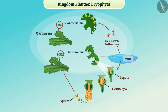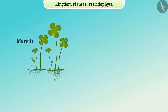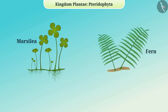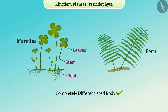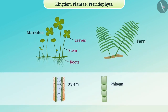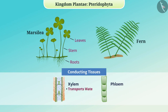Now let's understand pteridophyta. Plants of the type Marsilea, fern, etc. are included in pteridophyta. This class of the plant kingdom consists of all those plants whose body develops completely into roots, stems and leaves — that means their body is completely differentiated. They have specific tissues for the transport of water and other necessary substances from one part of the body to another. We call such tissues conducting tissues. Xylem tissue transports water while phloem tissue transports food and other substances from one part of the plant to another.